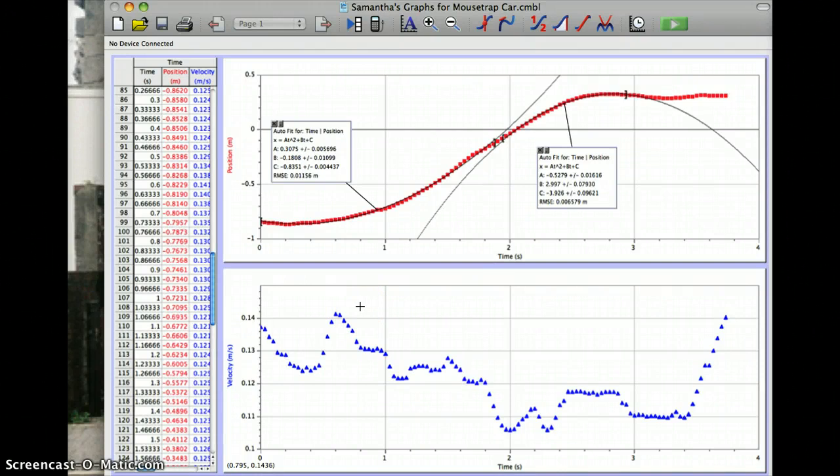That ended up being 0.139 meters per second. I also found the kinetic energy of the mousetrap car, which was the same as the elastic energy, which is 0.6 joules.